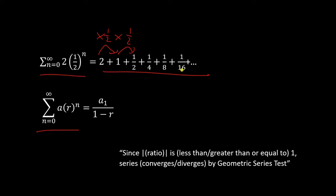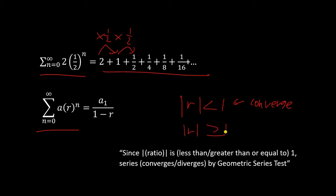Well, it's pretty easy to figure that out. If the absolute value of your common ratio r is less than 1, then your series will converge. If the ratio is greater than or equal to 1, then it will diverge. In our case, since our common ratio is 1/2, which is less than 1, the series will converge to a finite number. What number will it converge to? Well, there's a formula for that.